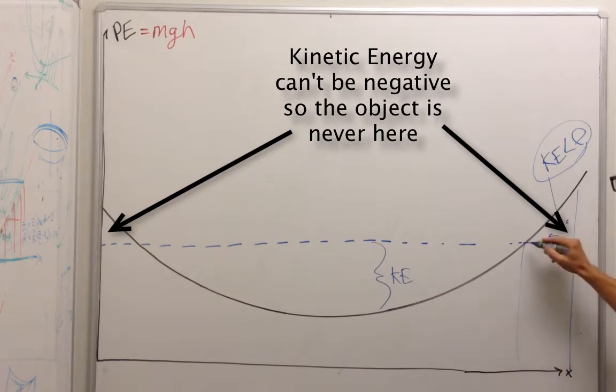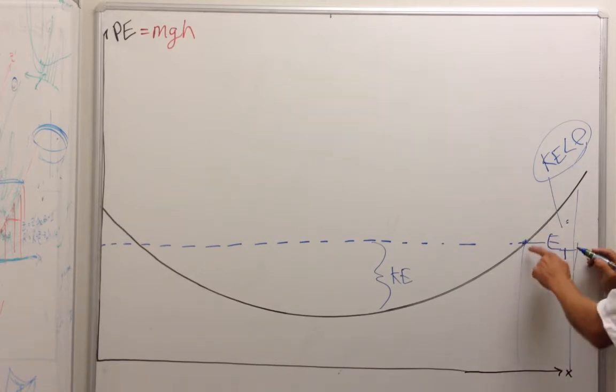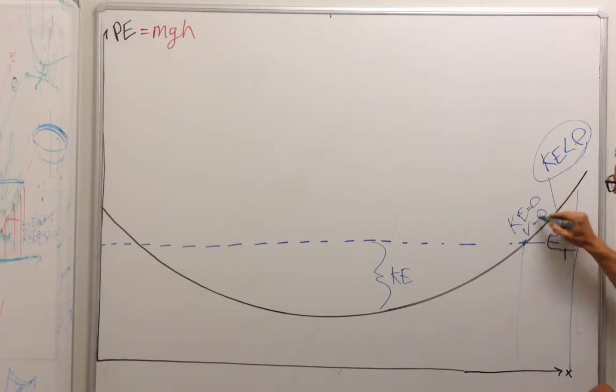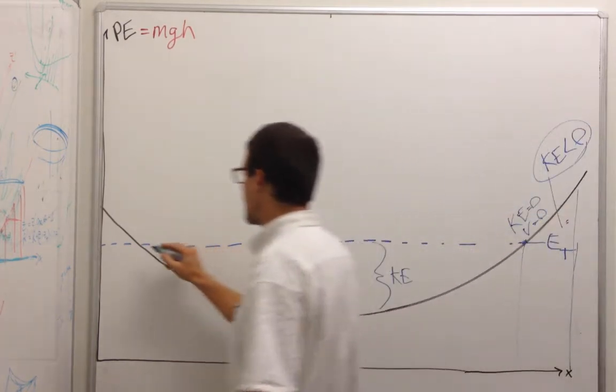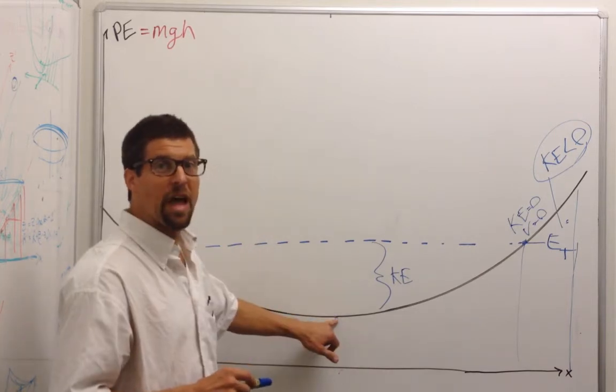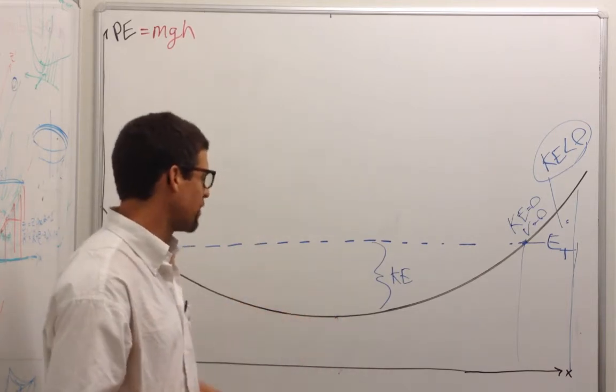You call that classically unallowed. These points here are where the total energy is equal to the potential energy. So the kinetic energy is zero, and velocity is zero, and this is a turning point. So this has two turning points here and here, and down at this point is where I have the greatest velocity because I have the least potential energy.